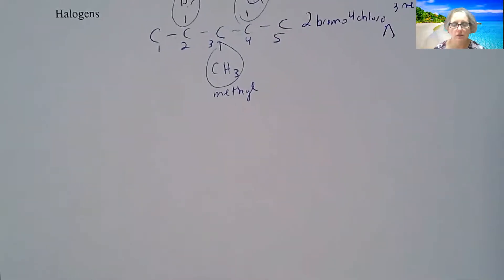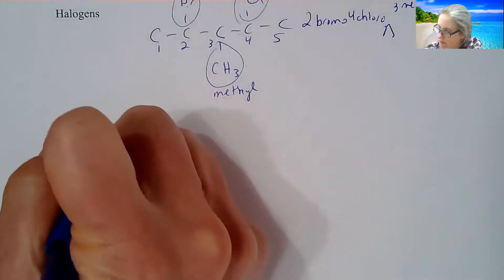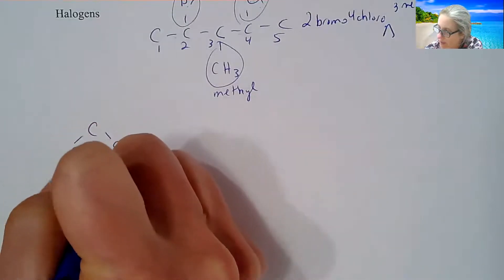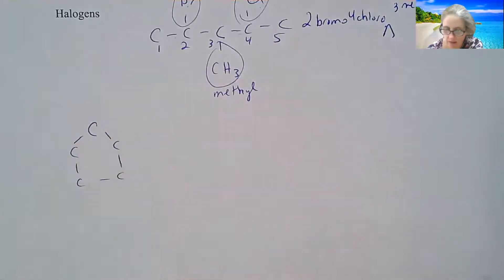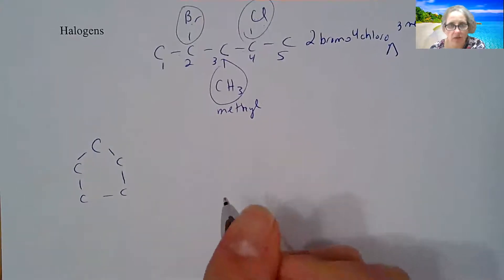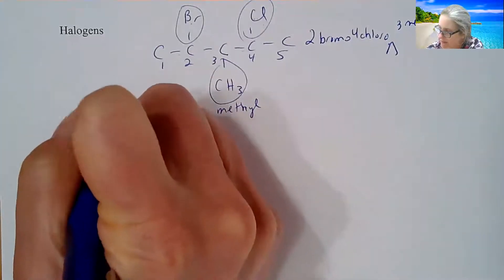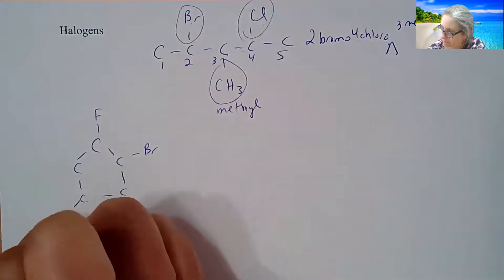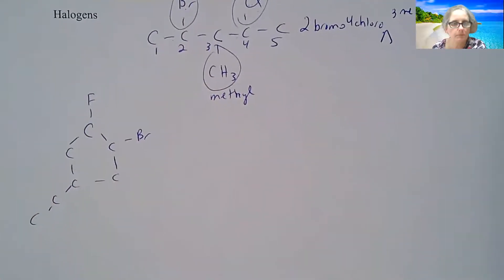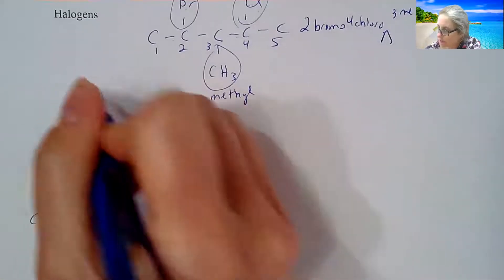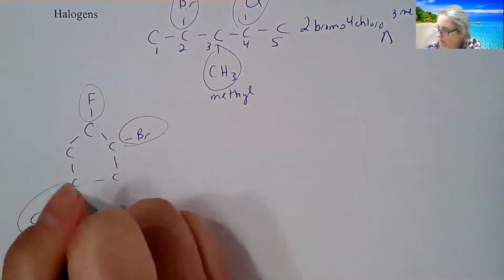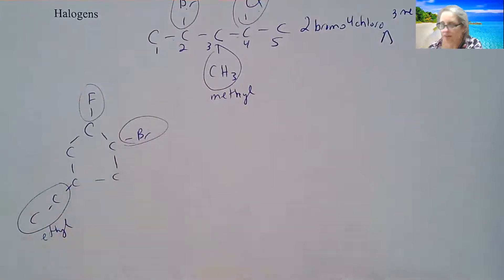Now, how do you do the cyclos? Well, the cyclos, again, you're going to go with the cyclo is going to be the longest chain. So we don't need to worry about that. But what if we have something like this? All right, so we have fluoro, we have bromo, and then we have two carbons over here, which is ethyl.